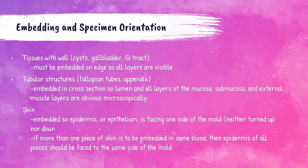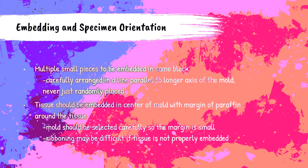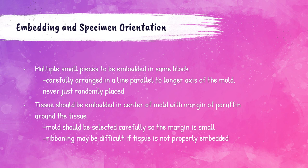Tissue with a wall, such as gallbladder, cyst tissue, and gastrointestinal tract tissue, must be embedded so all layers are visible in the block. Tissues with tubular structures like the appendix and fallopian tubes must be embedded in cross-section so their lumen and all mucosal and external muscle layers are visible. Skin specimens must be embedded so the epidermis or epithelium faces one side of the mold; if multiple pieces of skin are embedded together, the epidermis of each specimen should face the same side. Multiple small pieces of tissue embedded in the same mold should be arranged in a line parallel to the longer axis of the mold — not randomly placed — to ensure the pathologist does not miss a single piece of tissue. Tissue should be placed in the center of the embedding mold to allow proper ribboning.